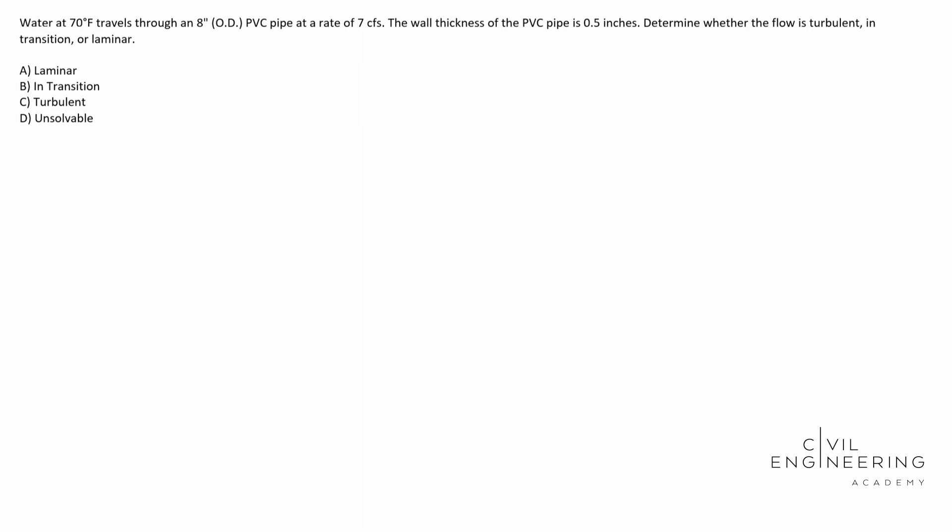The wall thickness of the PVC pipe is 0.5 inches. Determine whether the flow is turbulent, in transition, or laminar.